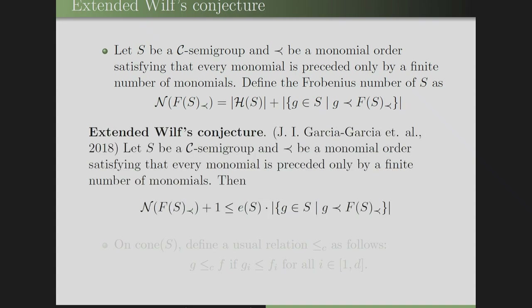Garcia et al. extended Wilf's conjecture to C semi-groups as follows: the Frobenius number plus 1 is always less than or equal to the product of the embedding dimension E(S) and the cardinality of {G in S : G ≤ F(S)}.